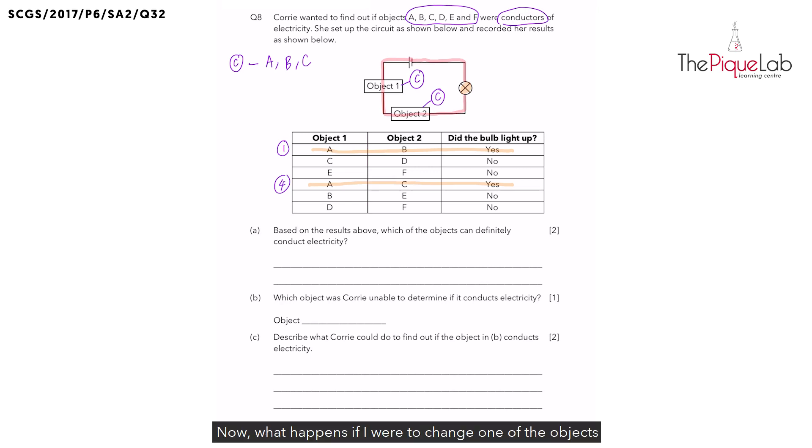Now what happens if I were to change one of the objects to an insulator like this? Will the bulb still light up? No, it won't, as the insulator prevents electricity from flowing through and will create a gap, stopping electricity from flowing through the bulb, and the bulb will not light up. I'm going to put a cross at the bulb. So all these times when the bulb did not light up, one of the objects must be an electrical insulator.